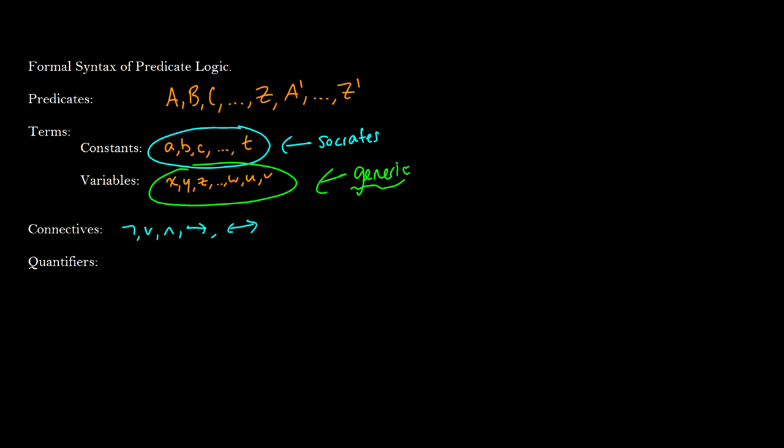Now we have something new called quantifiers. There's the upside-down A, which stands for 'all,' and the backwards E, which means 'exists.' If we want to say 'all x,' we write upside-down A with an x. If we want to say 'there exists an x,' we write backwards E of an x.